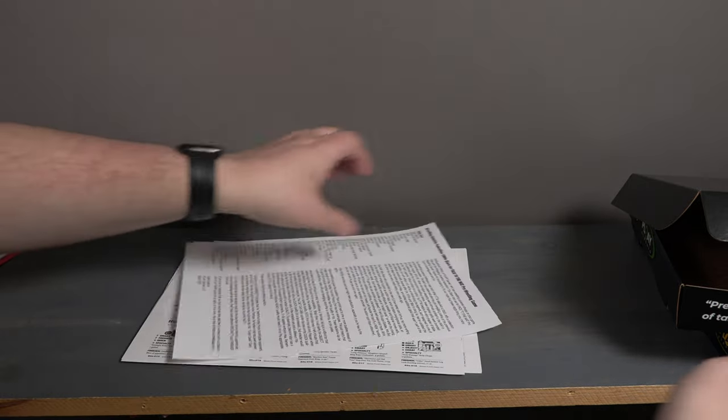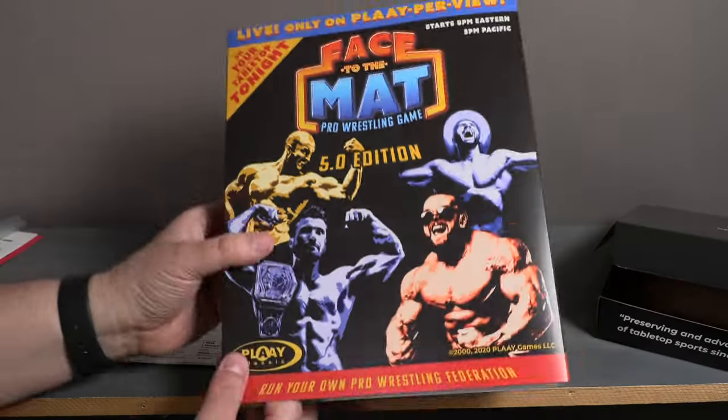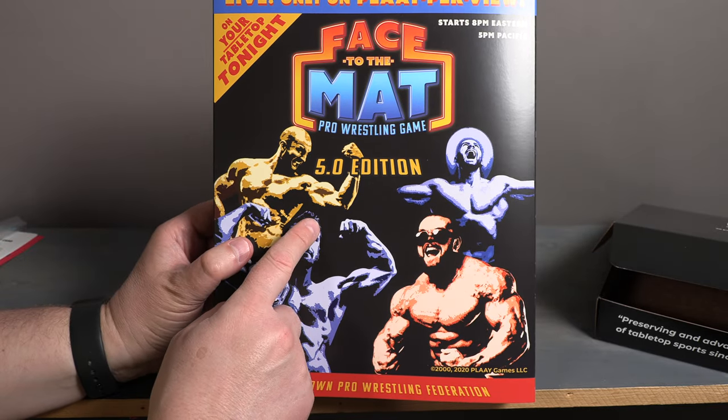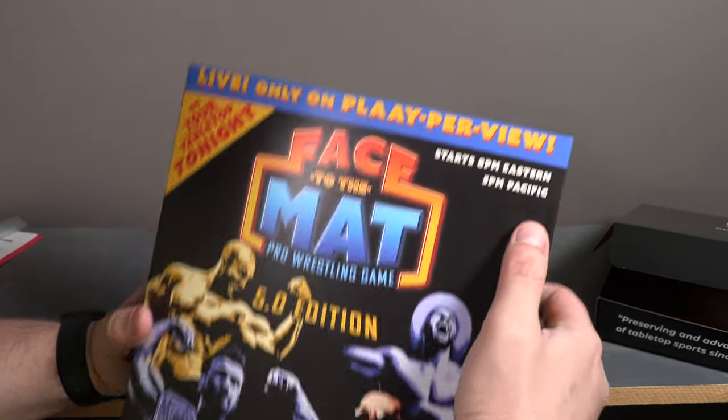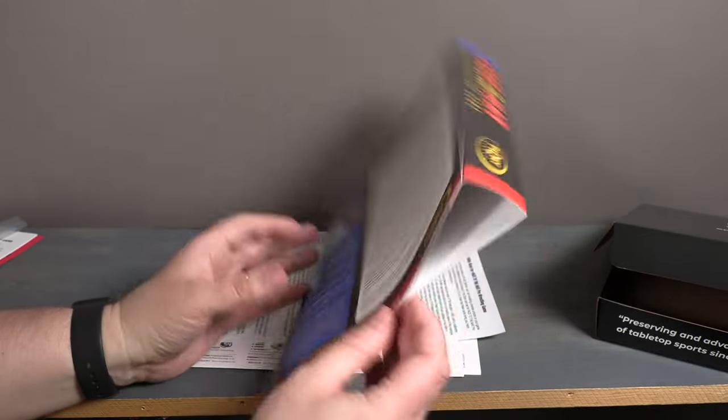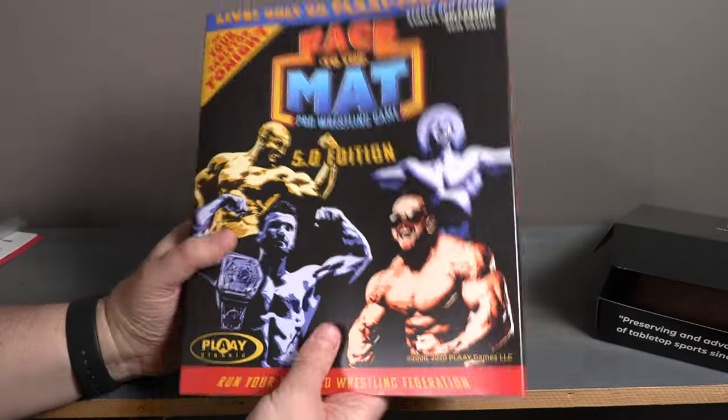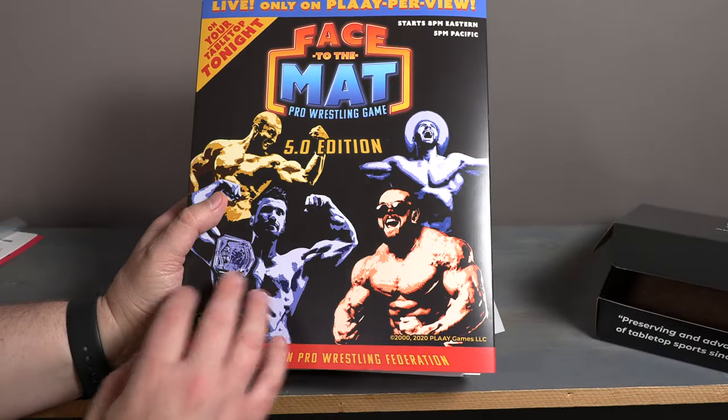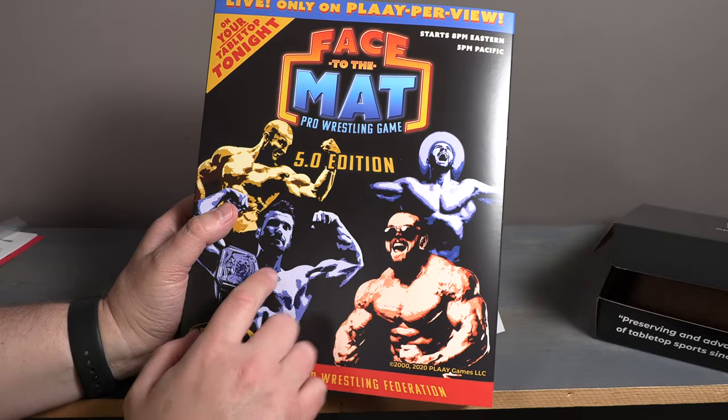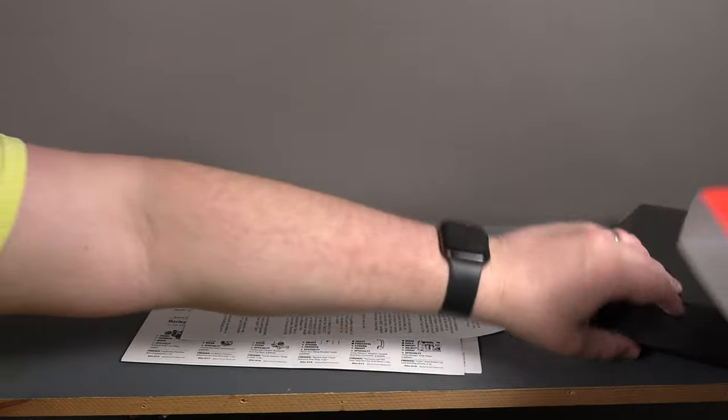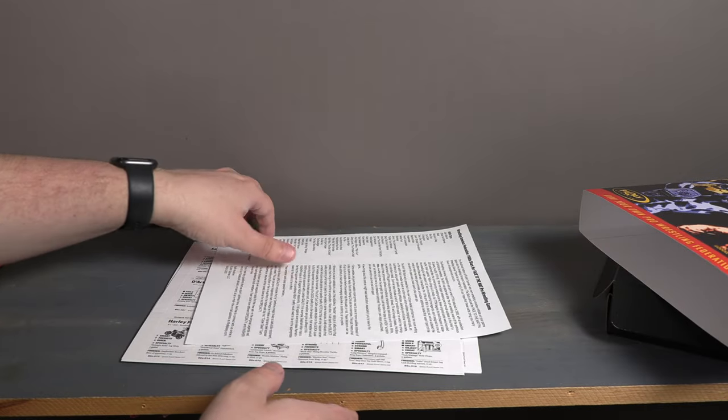And there you go, that is a Face to the Mat fifth edition. I believe I have an earlier edition of this. I love this, starts at 8 p.m. Eastern, 5 p.m. Pacific. I think I have an earlier version of this, but it's good to get the 5.0 version, 5.0 edition. Would you like to see me play some of this on the channel? If so, let me know in the comments below. Let me know if you have this game, what you like about it.